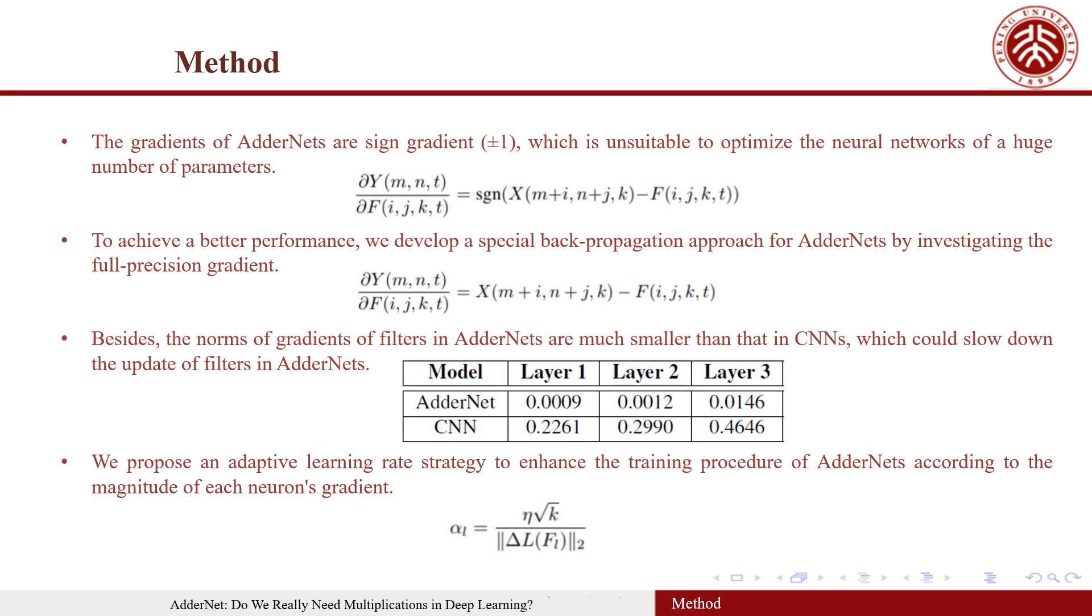We then analyze the influence of this new similarity measure on optimization of the neural network. First, the gradients of AdderNet are sign gradients, which is suitable to optimize the neural network with a huge number of parameters. To achieve better performance, we develop a special back propagation approach for AdderNet by investigating the full precision gradient.